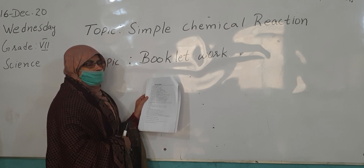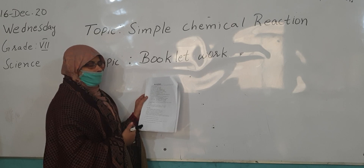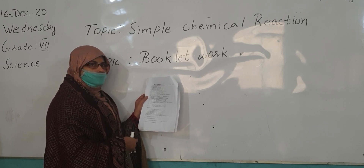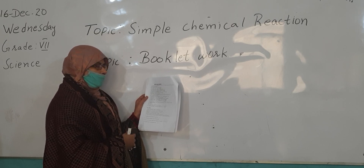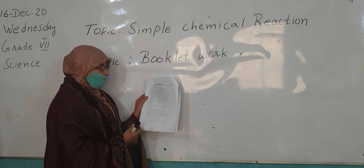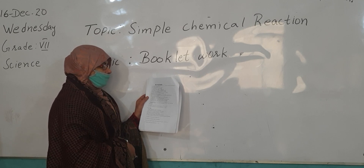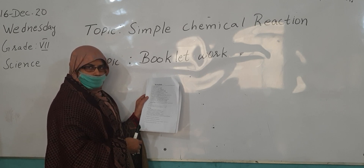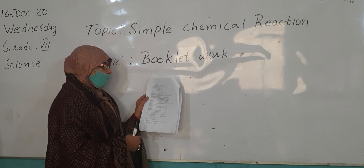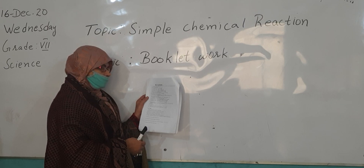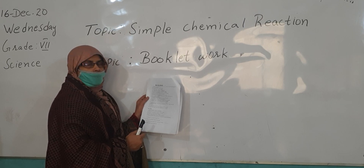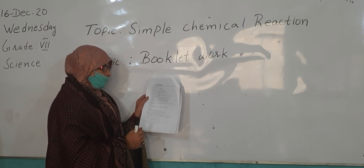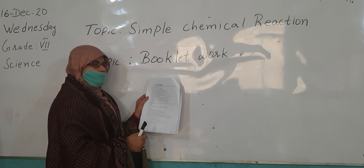All around us, things are made up of different elements, and it is a necessity of our life to use them in different ways. An electron has a negative charge; it is a particle of an atom. A proton has a positive charge. A neutron has no charge on it.